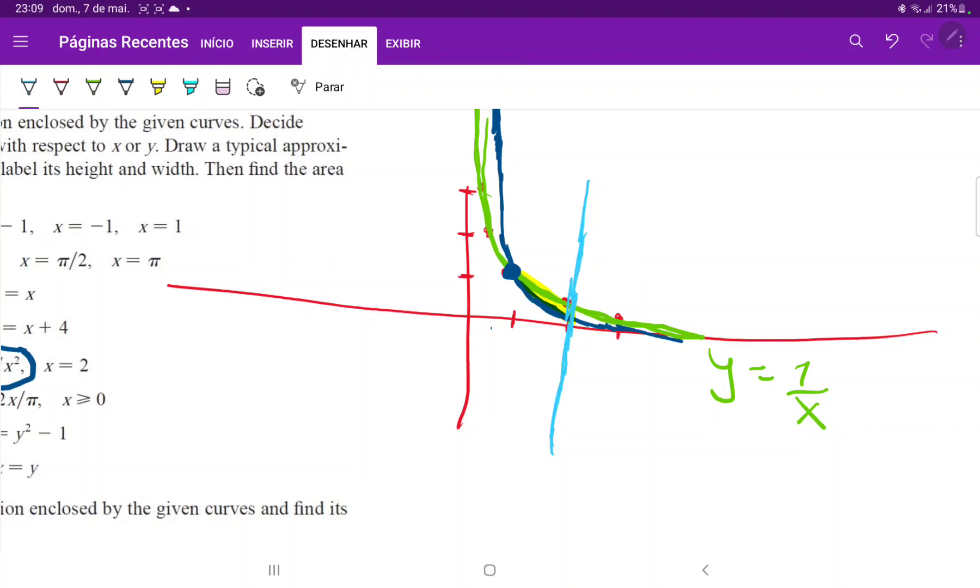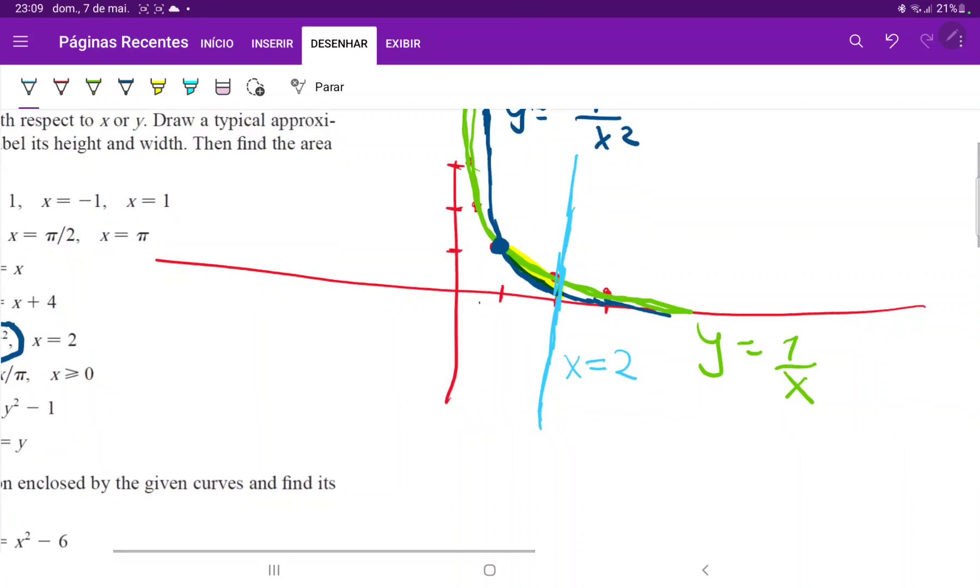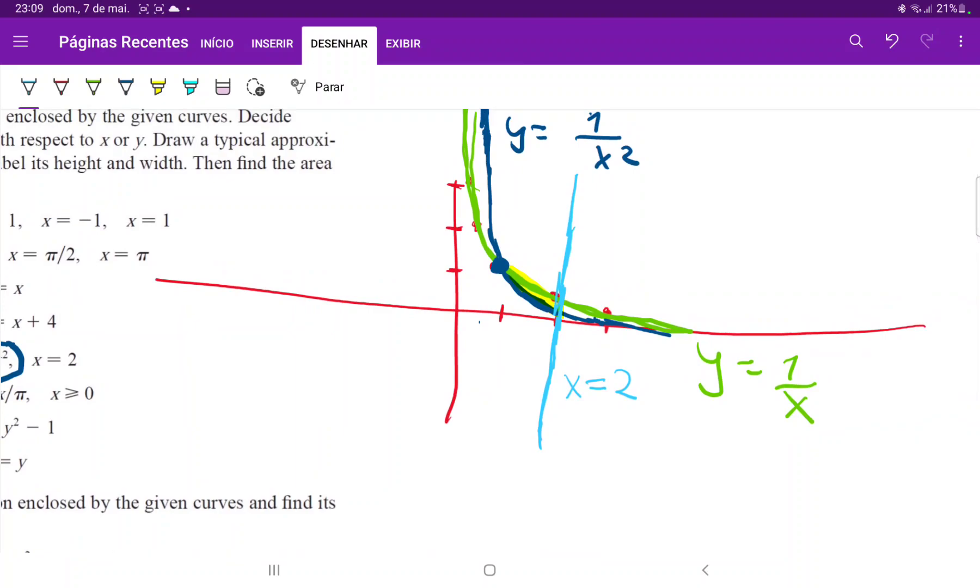So we can see here that the upper part is the curve, and let me just write this down: y equals 1 over x squared, and this is x equals 2. We can see that the upper curve is the curve that's in green, and the lower curve is the curve that's in blue.